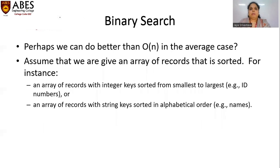For binary search, perhaps we can do better than O(n) in the average case. We assume that we are given an array of records that is sorted — for instance, an array of records with integer keys sorted from smallest to largest, such as ID numbers, or an array of records with string keys sorted in alphabetical order, such as names. We can also take the example of a dictionary.